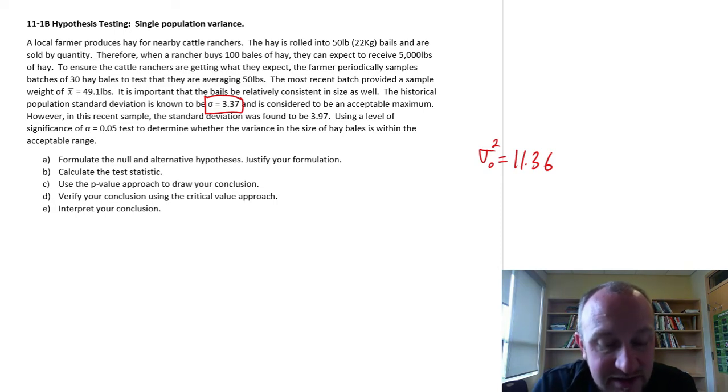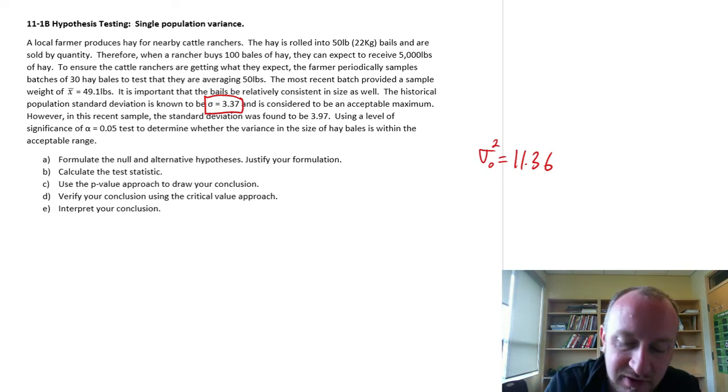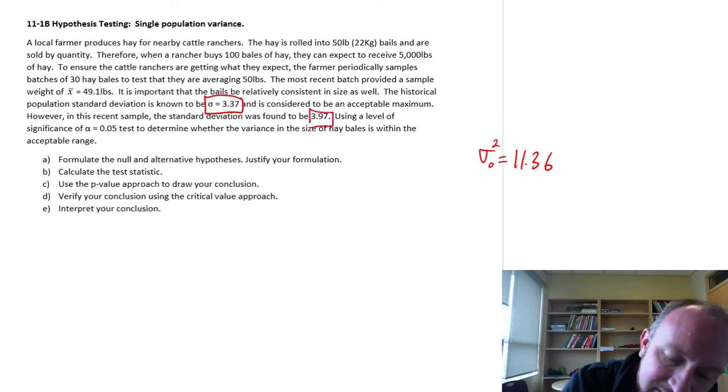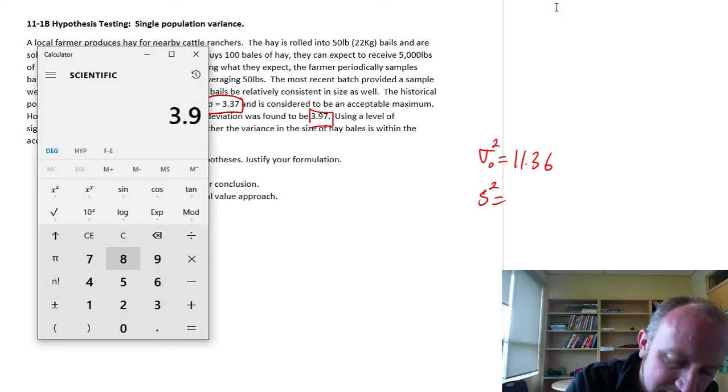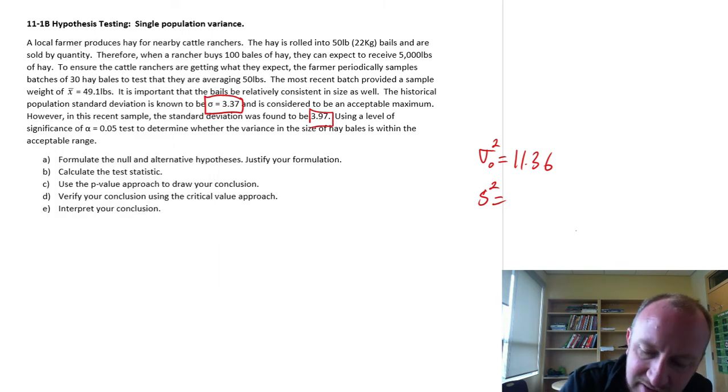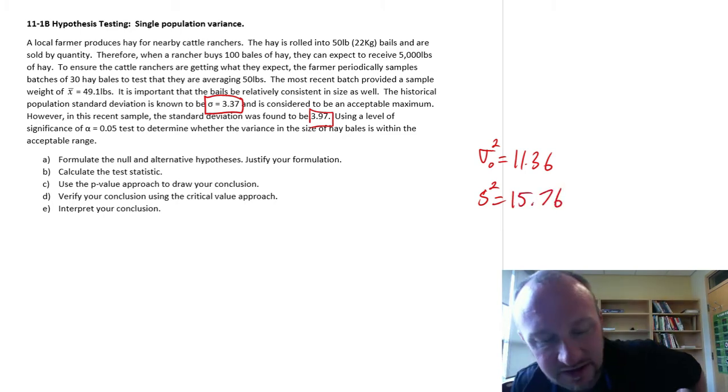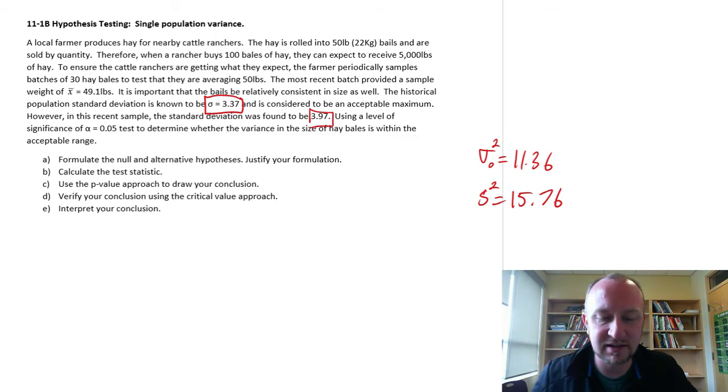However, in a recent sample, the standard deviation was found to be 3.97, and so that corresponds then to a sample variance of 3.97 squared, 15.76. Using a level of significance of alpha .05, test to determine whether the variance in the size of hay bales is within the acceptable range.